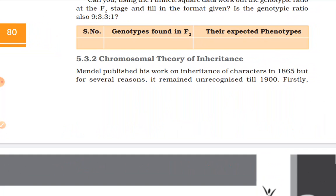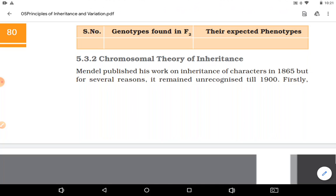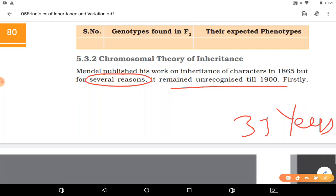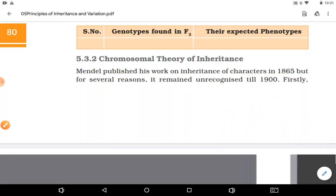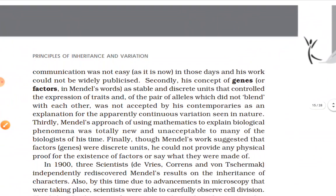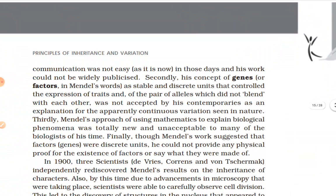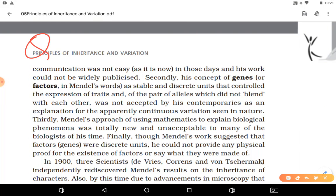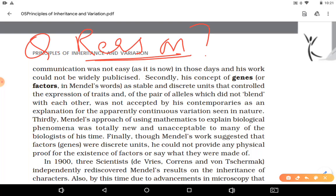Mendel's work on inheritance of characters was published in 1865, but for several reasons it was unrecognized until 1900 — approximately 35 years. His work received no recognition for 35 years. The question is: what were the reasons why Mendel's work was unrecognized till 1900?